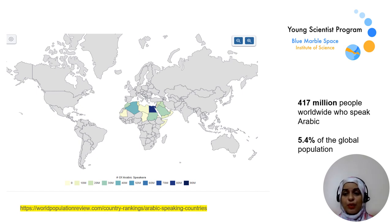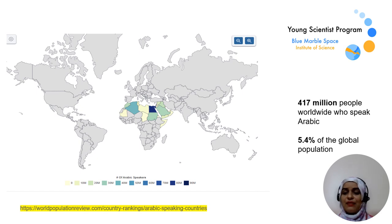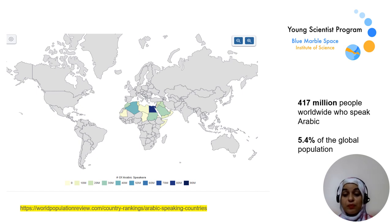As of 2024, there are approximately 417 million people worldwide who speak Arabic, which accounts for about 5.4% of the global population. Arabic is spoken in nearly 25 independent countries and several territories where it's an official or co-official language. Despite this significant number, Arabic speakers often face challenges when using LLMs due to these models being predominantly trained on English data, which further leads to inherent biases.